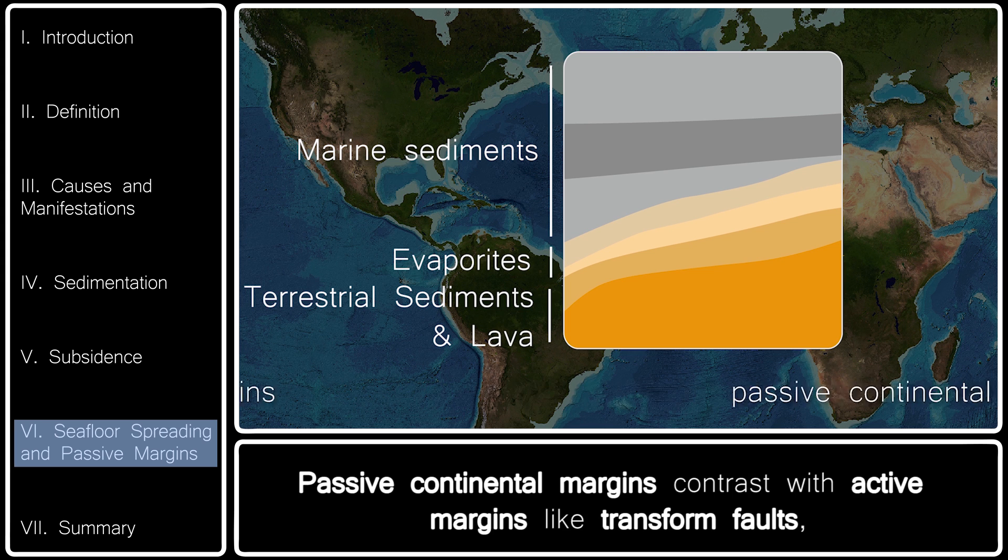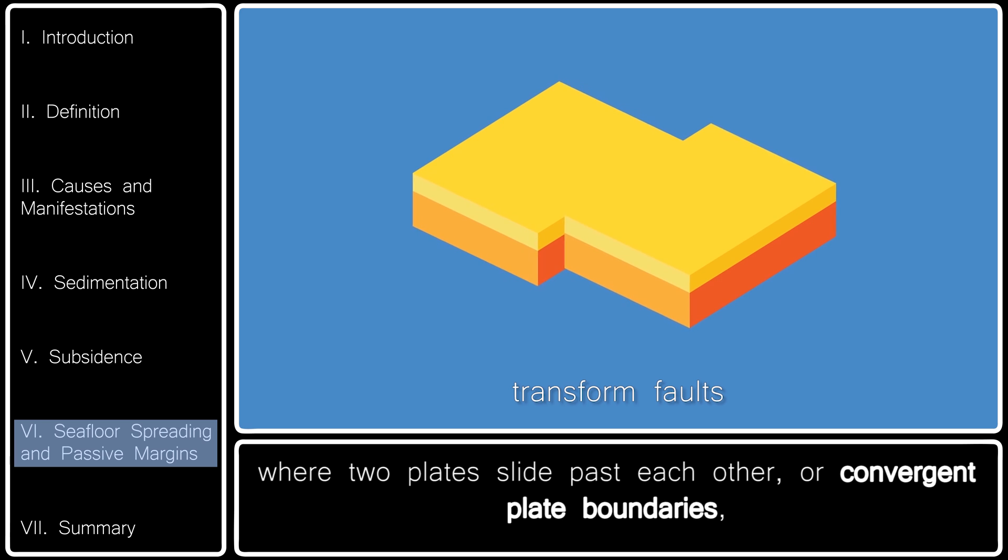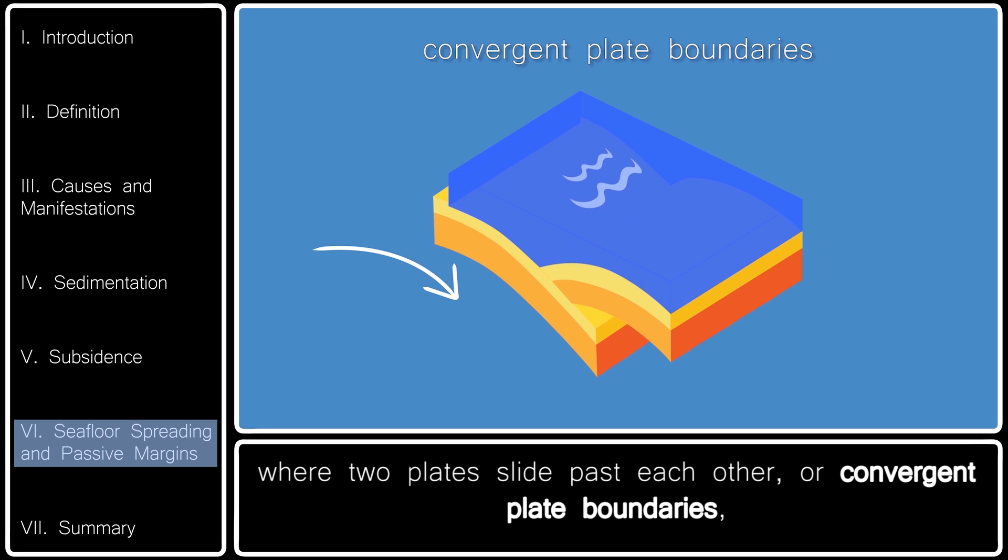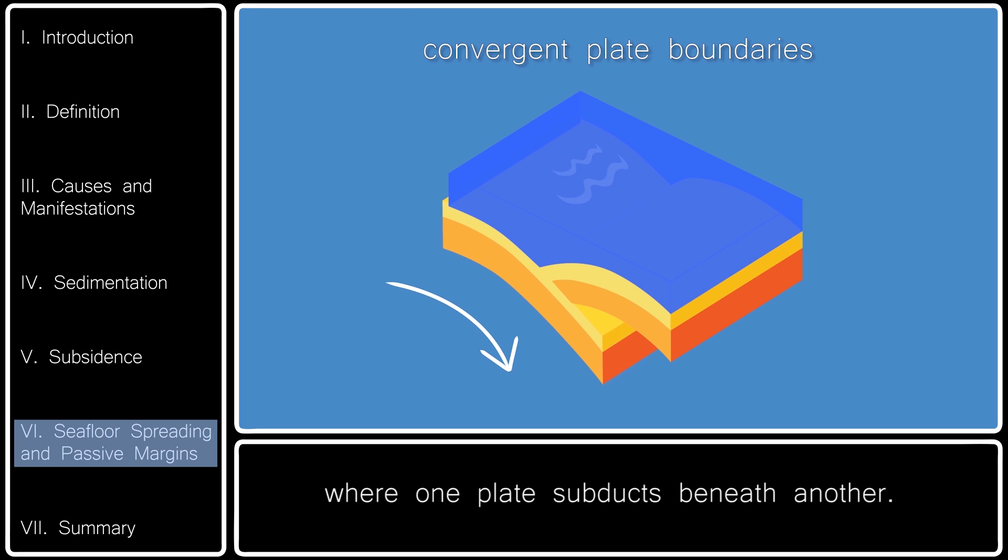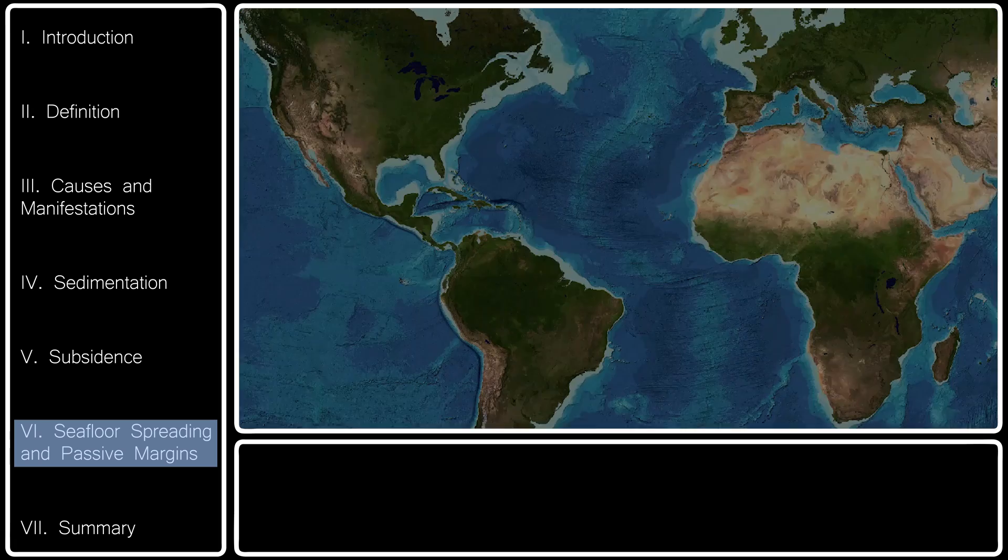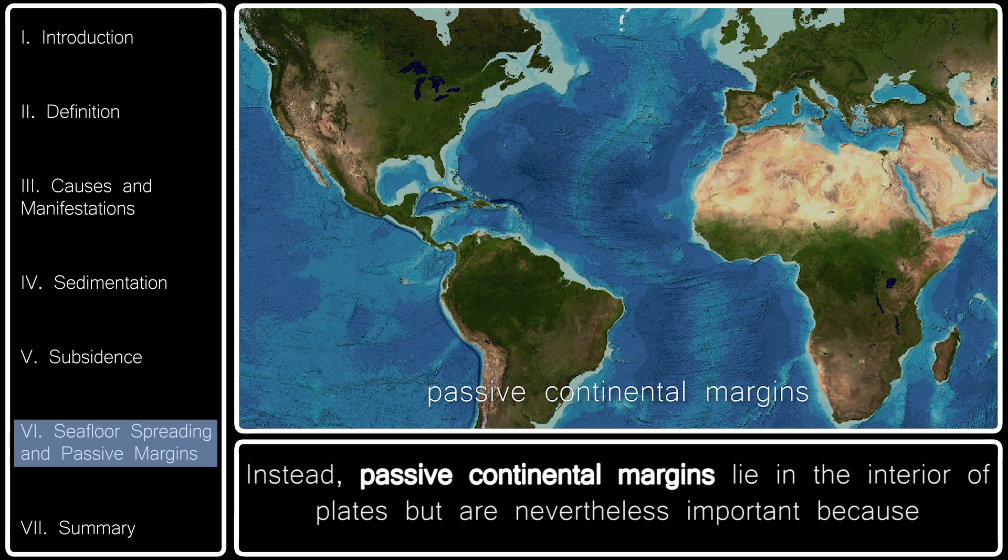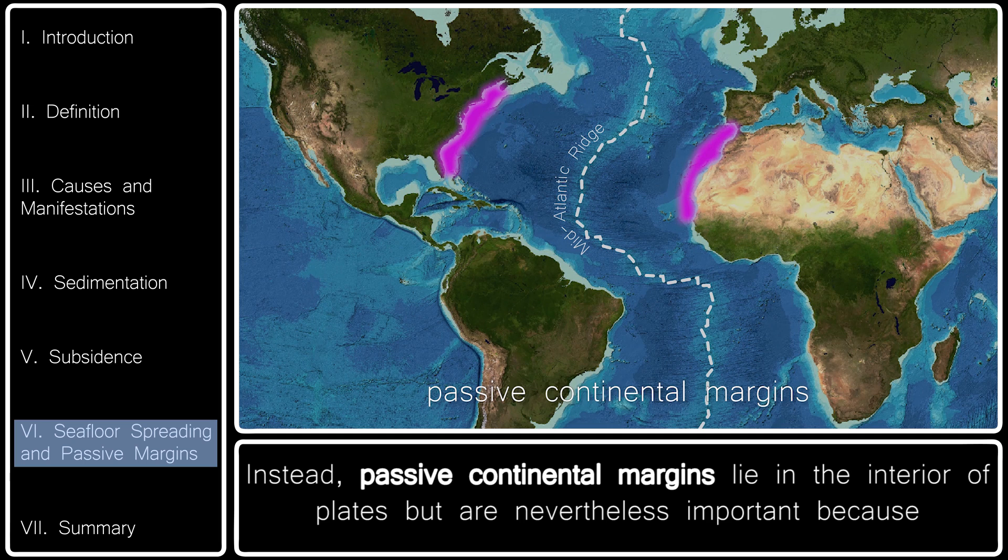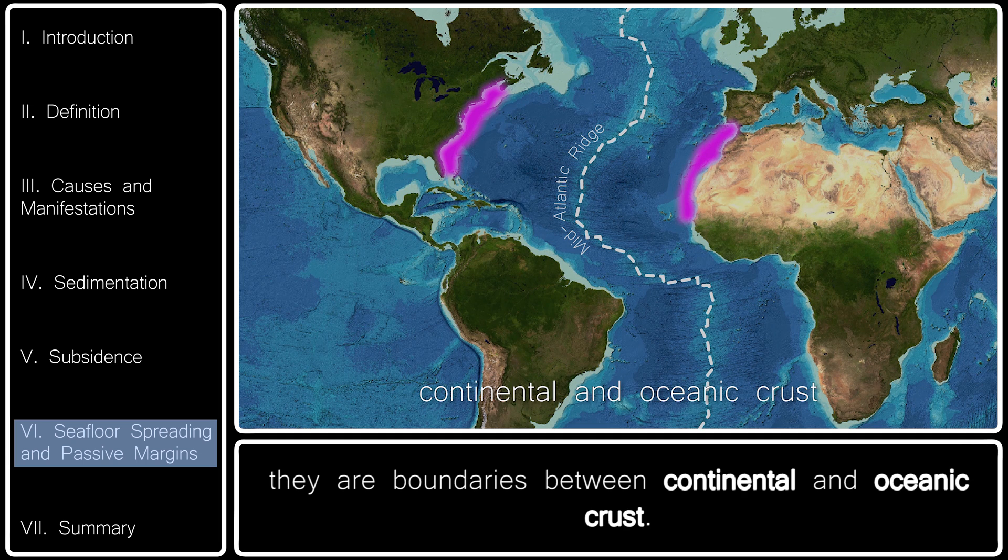Passive continental margins contrast with active margins like transform faults, where two plates slide past each other, or convergent plate boundaries, where one plate subducts beneath another. Instead, passive continental margins lie in the interior of plates but are nevertheless important because they are boundaries between continental and oceanic crust.